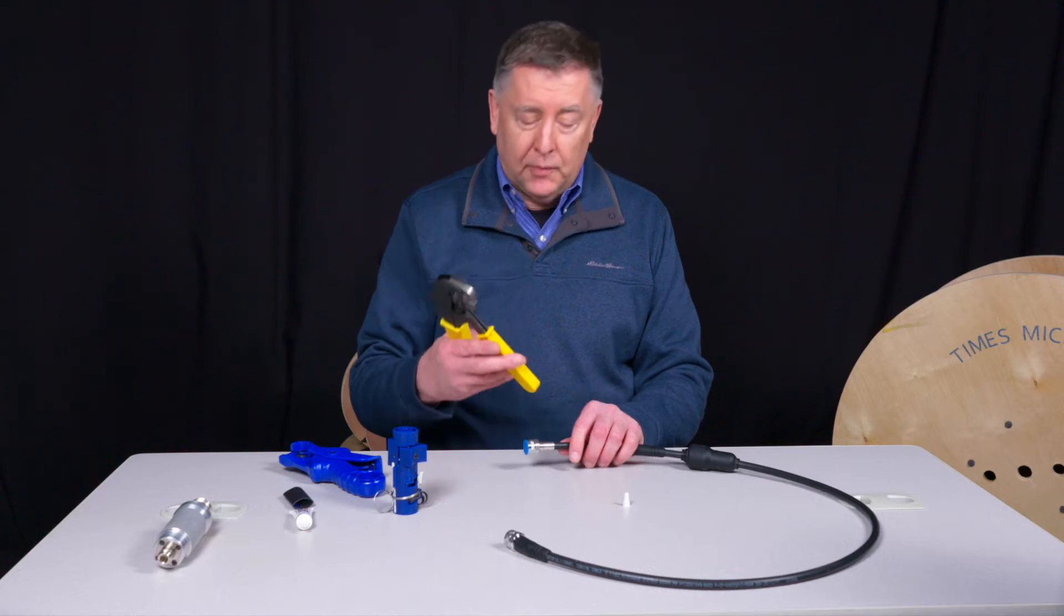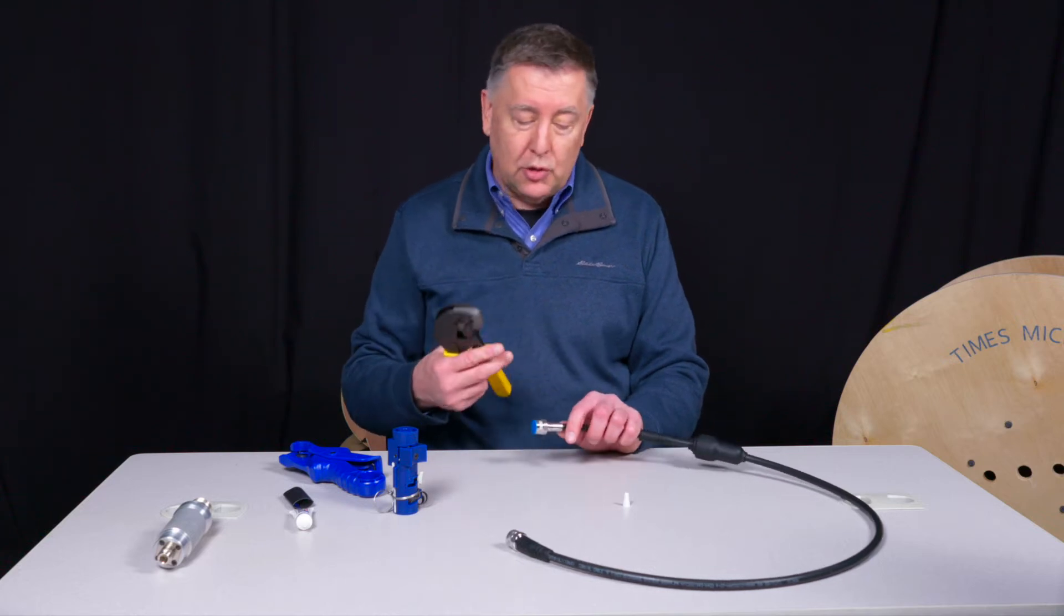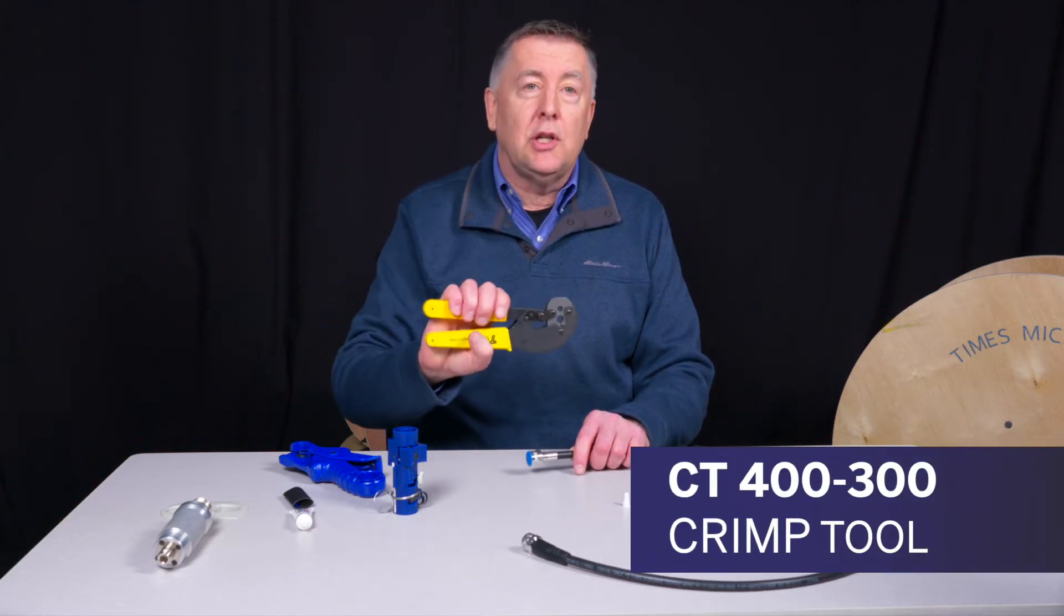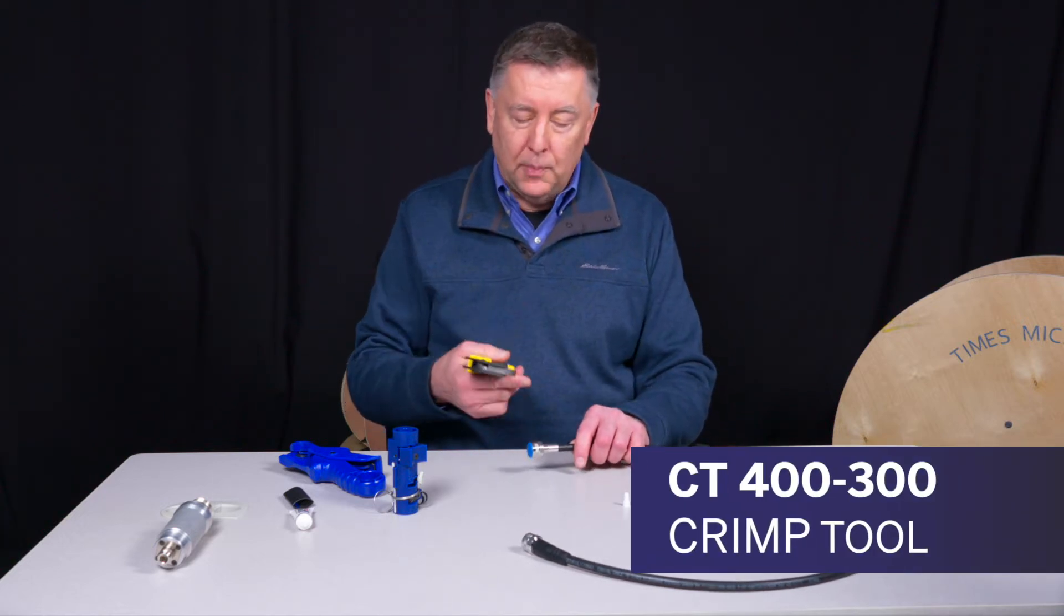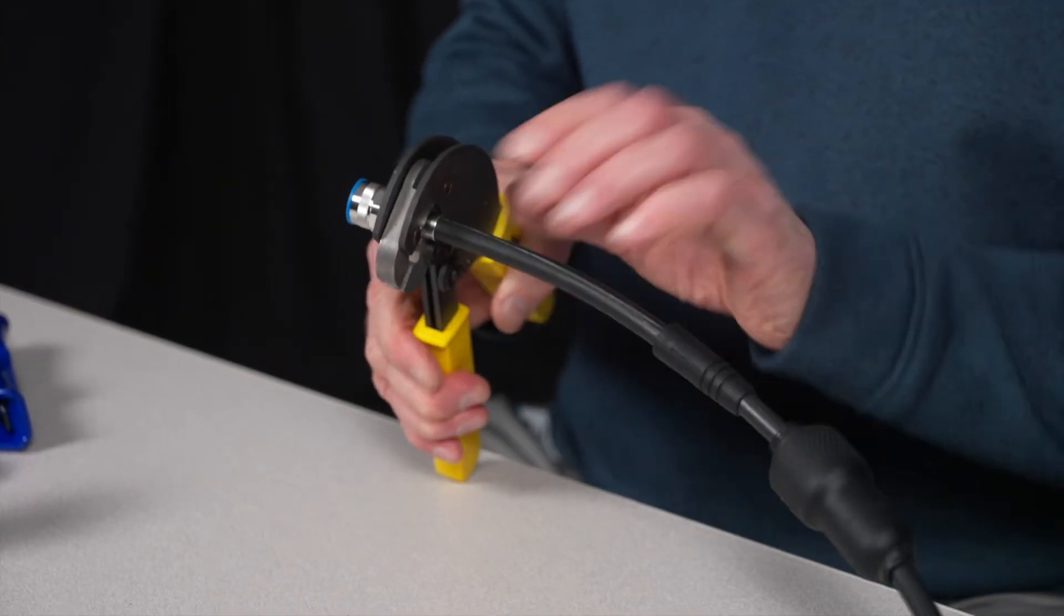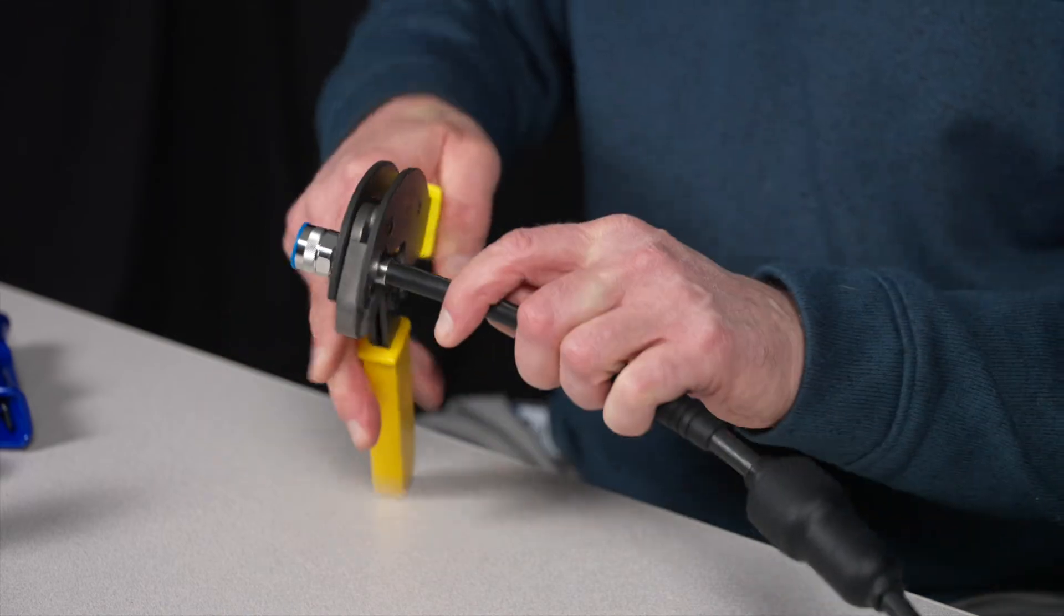Now, you take a 429 hex. We have a number of tools that you can use to get that hex dimension. This is our CT-400-300 crimp tool.